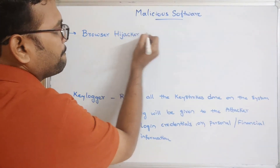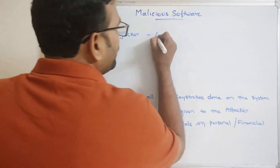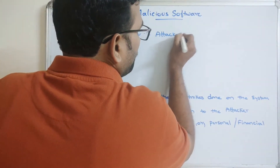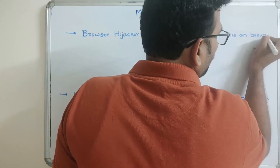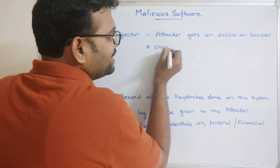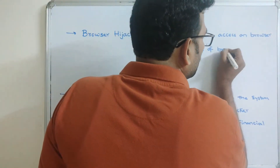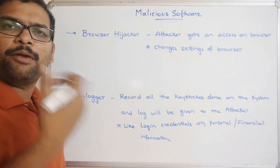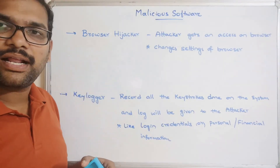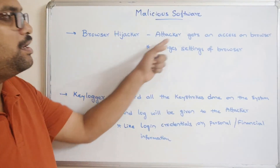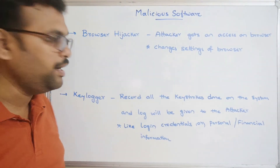The next type is browser hijacker. The attacker gains access to the browser and changes its settings, promoting their own web pages or fake pages. The complete control of the browser is in the hands of the attacker. Browser hijacking is typically done through web or browser extensions.